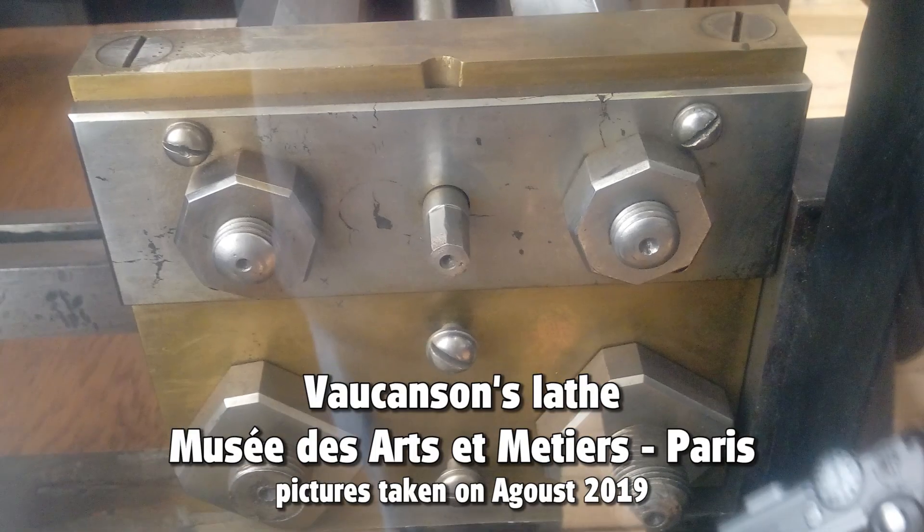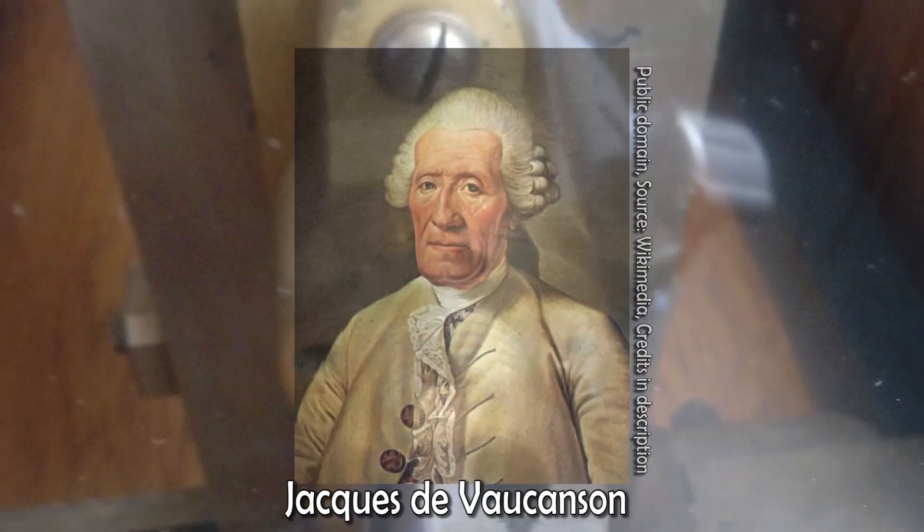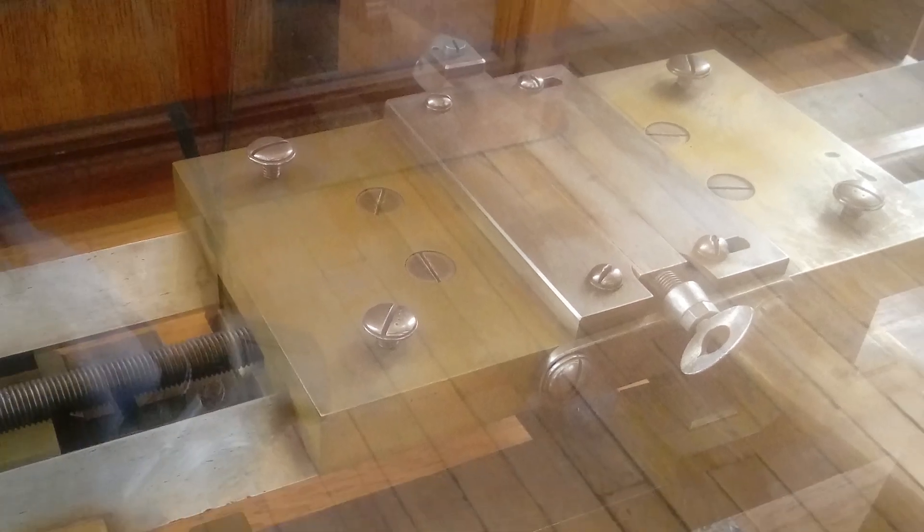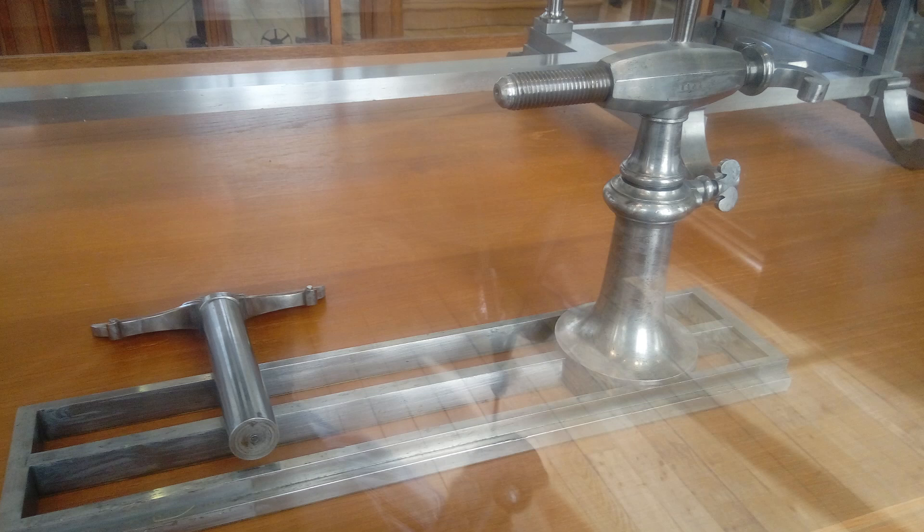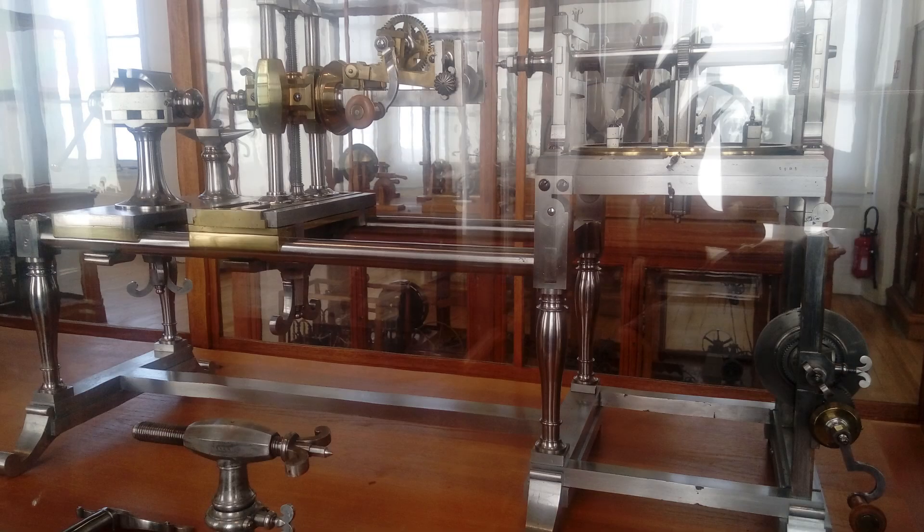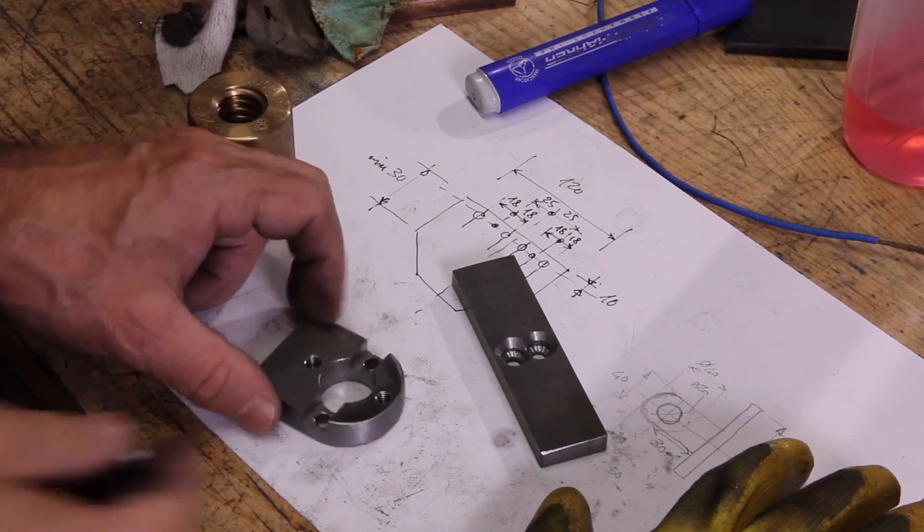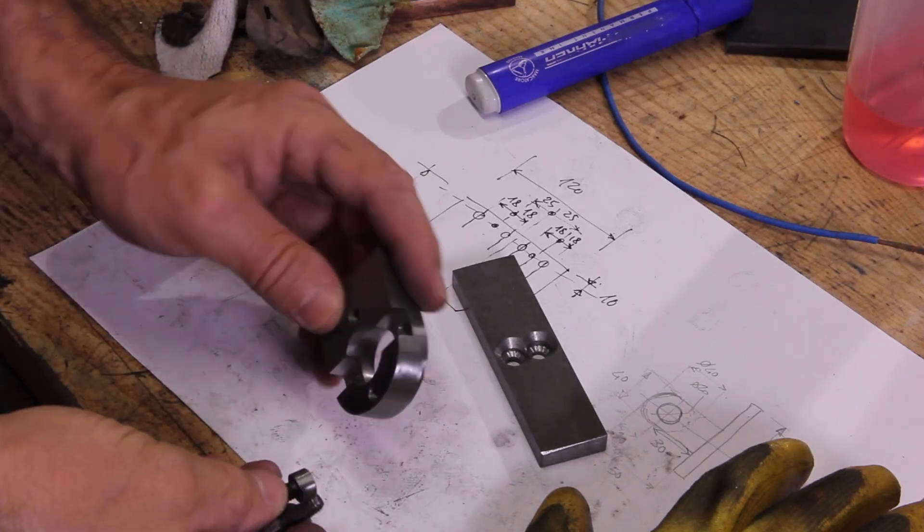The man credited with inventing and building the first old metal lathe was Jacques de Vaucanson, a French inventor from the 1700s. Many parts of these machines were mostly built by hand. So with patience, care and the right techniques, it is possible to manually build precision parts. They did it, so why can't I?